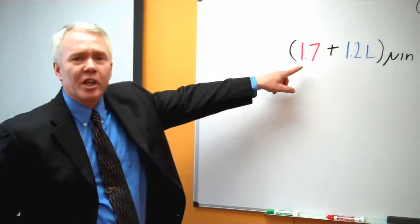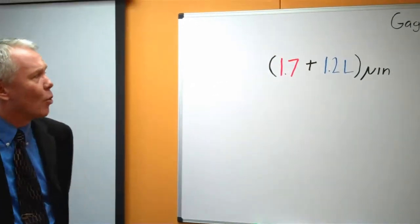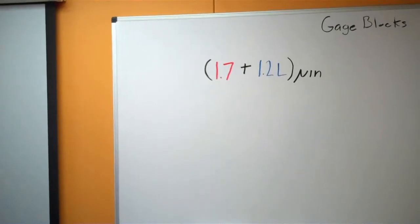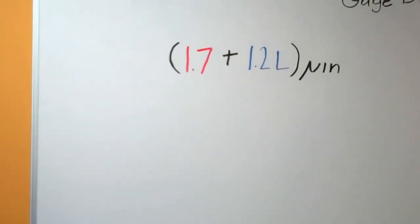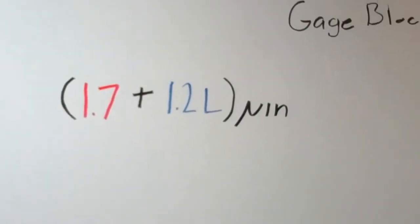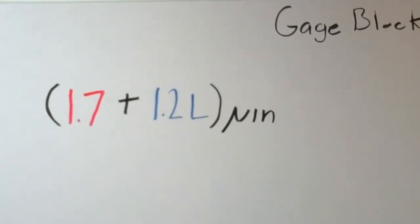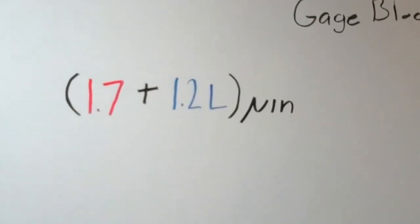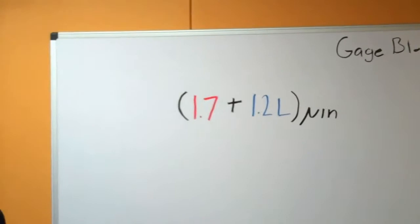For example, here's the formula that we use for gauge block uncertainty. It reads 1.7 plus 1.2L and the units being micro inches. One of the common questions is from our customers, what does this mean to me? And so I want to address that for a number of people out there that might have this question.